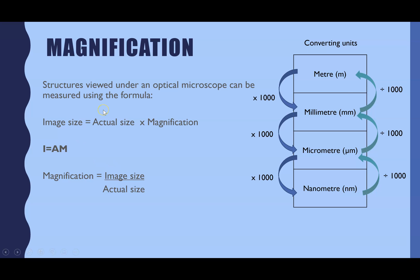Magnification is one of the maths skills linked to microscopes and is used with optical microscope images. The formula — from GCSE — is: Image size = Actual size × Magnification. I've written it this way because the mnemonic 'I AM' helps remember it: I is image, A is actual, M is magnification. You can then rearrange the formula to find magnification or actual size.